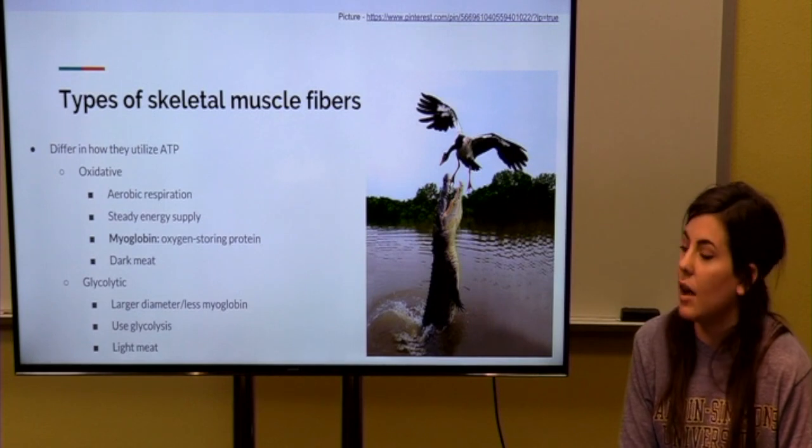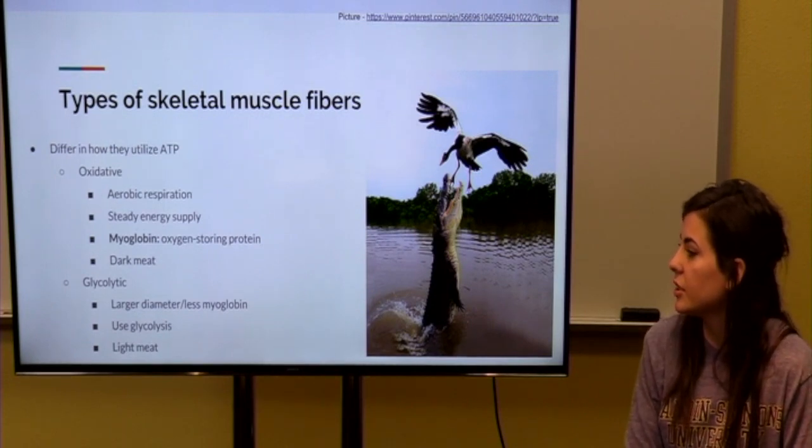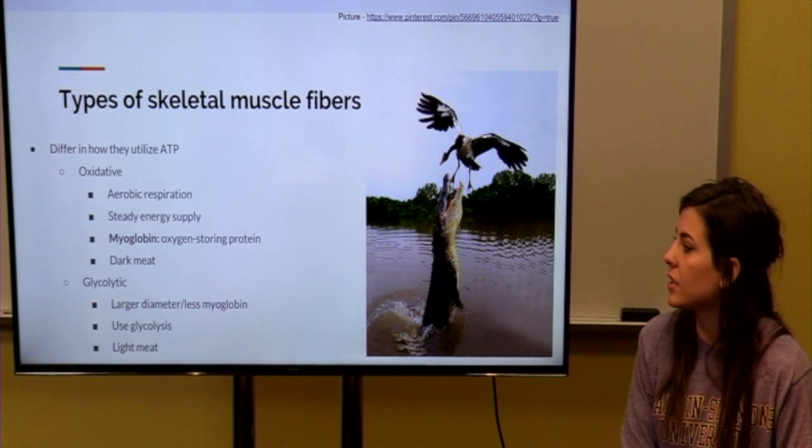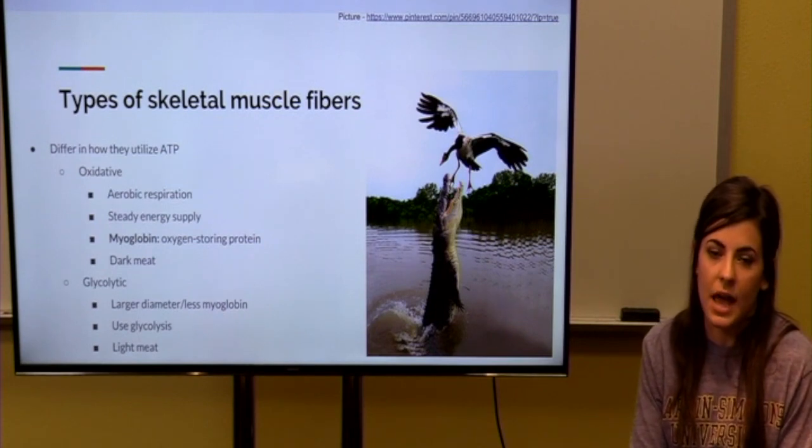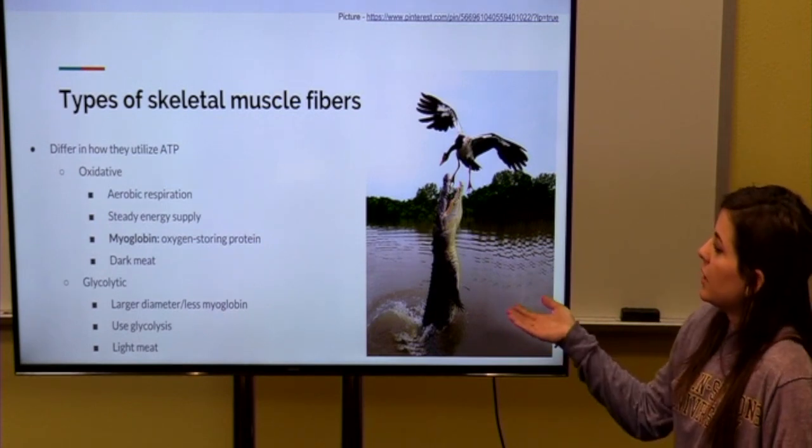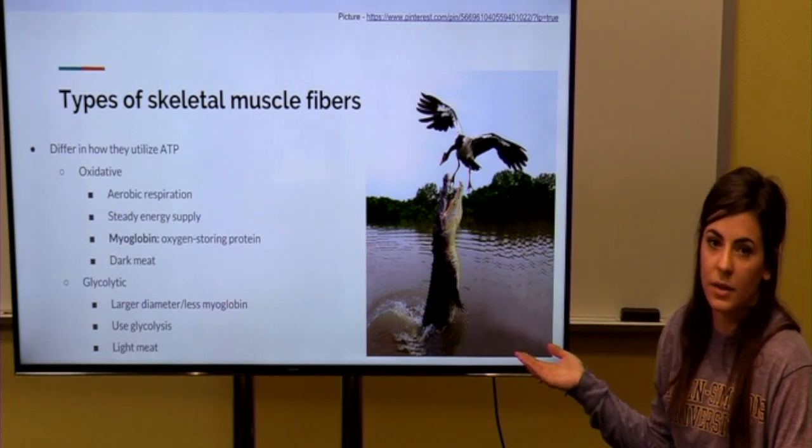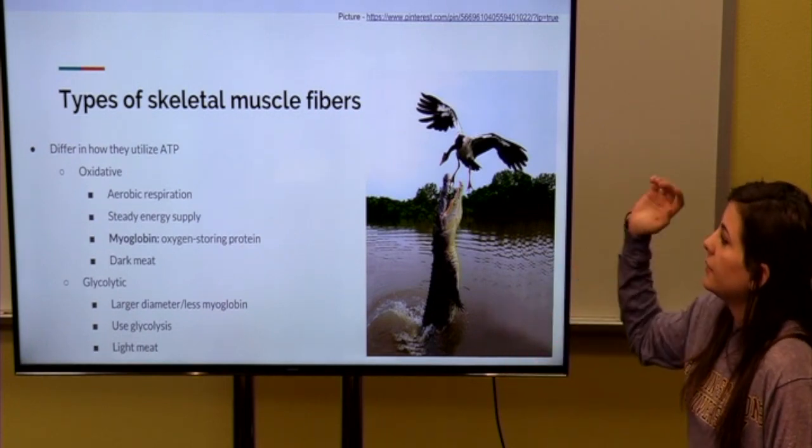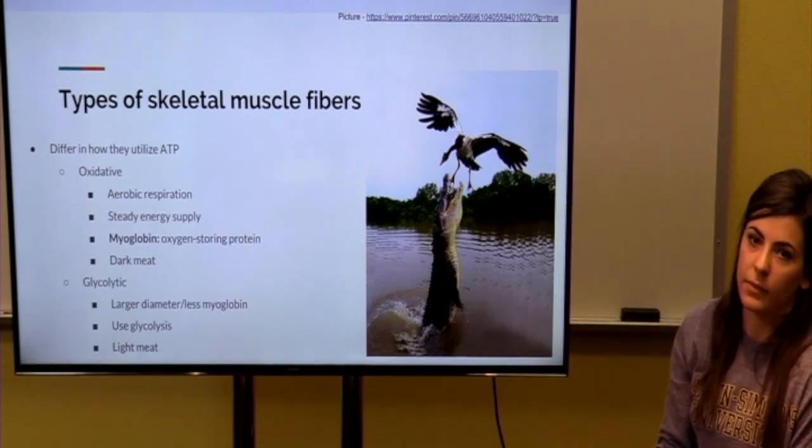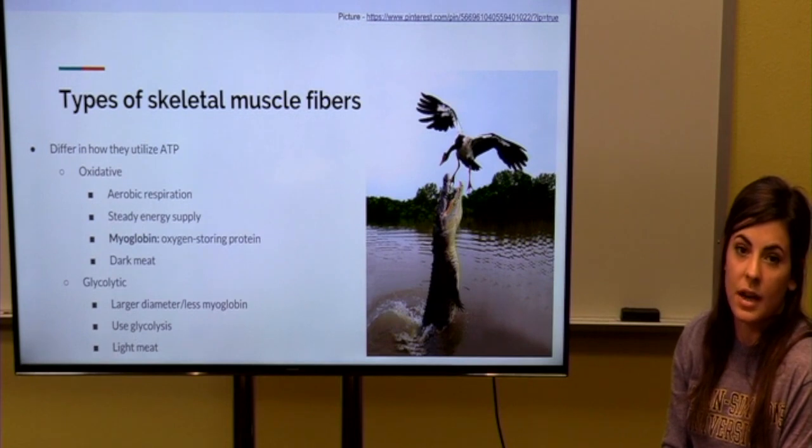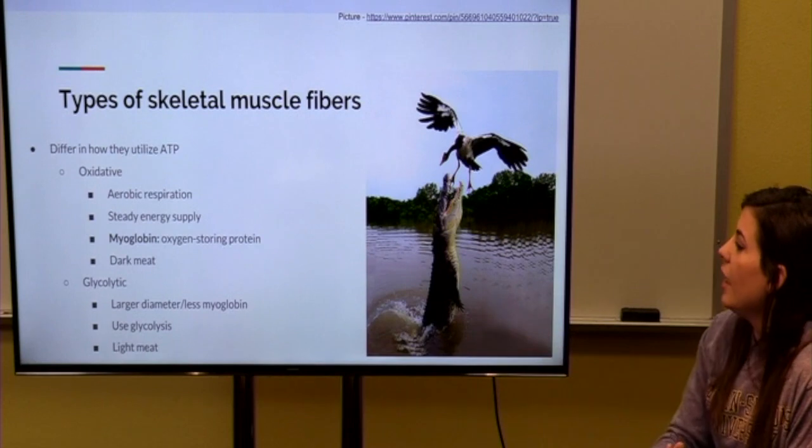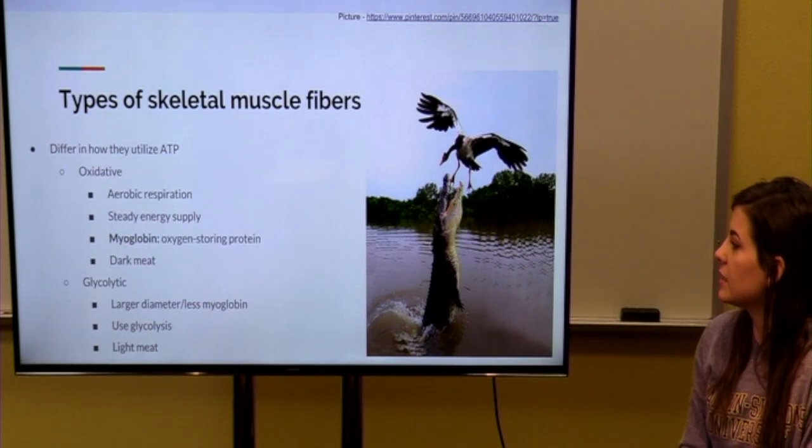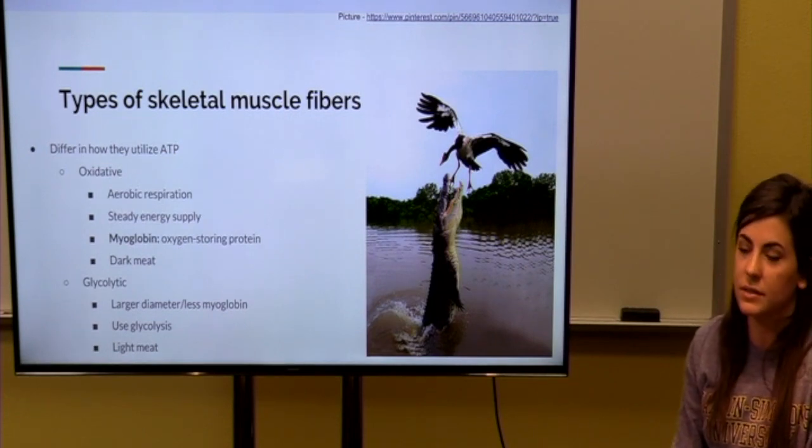And the other type is glycolytic. Glycolytic is larger in diameter, and it has less of the oxygen storing protein myoglobin. And if you look at this muscle fiber in an animal, it is light meat. And I put this picture here to show an example of the oxidative and glycolytic muscles, or fibers in animals. The bird here has primarily oxidative fibers, which allows it to fly for an extended period of time. And here, the crocodile has primarily glycolytic fibers, and this allows it to be explosive and fast, capturing its prey.